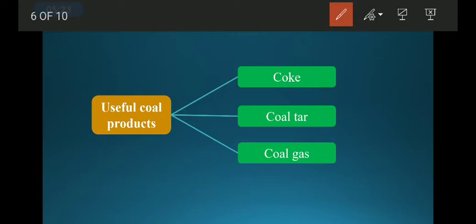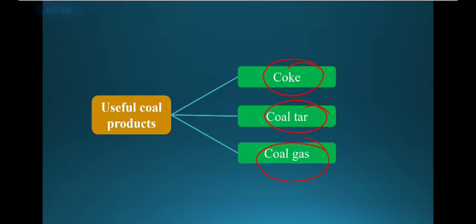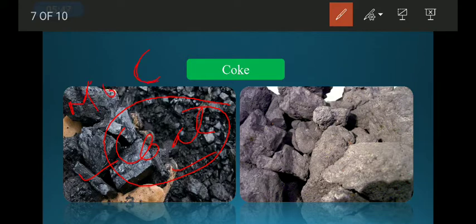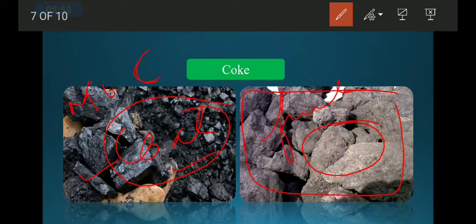By processing coal we can get useful products like coke, coal tar, and coal gas. Coke is an impure form of coal. It contains most of the carbon. Coke is used as fuel in industries and for other purposes.